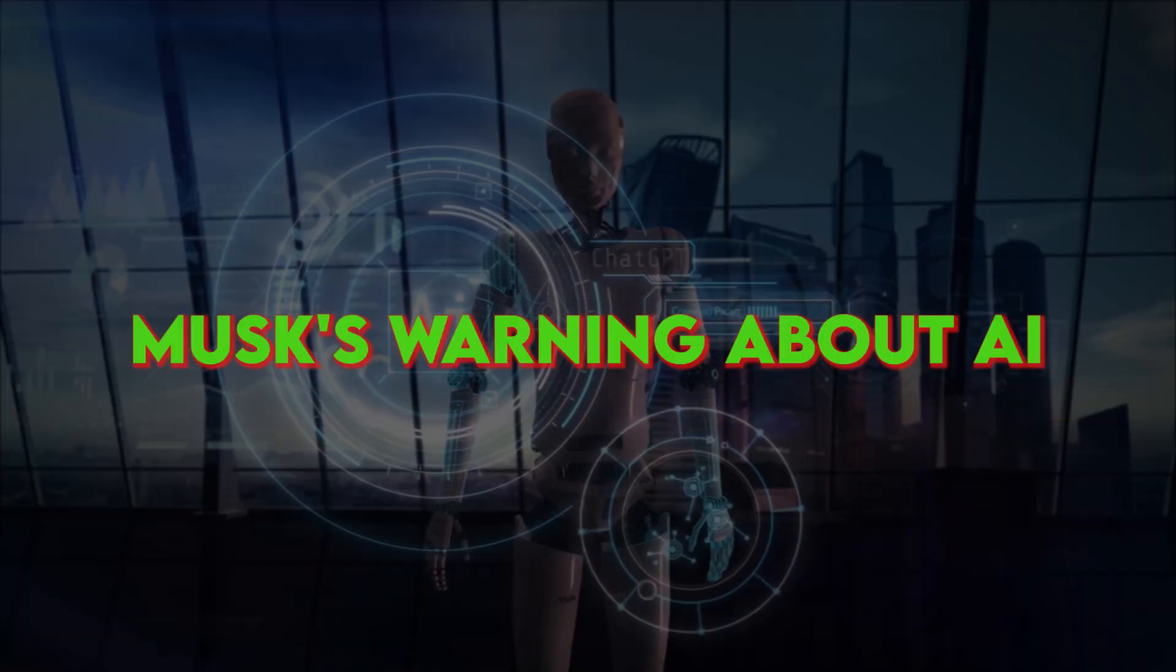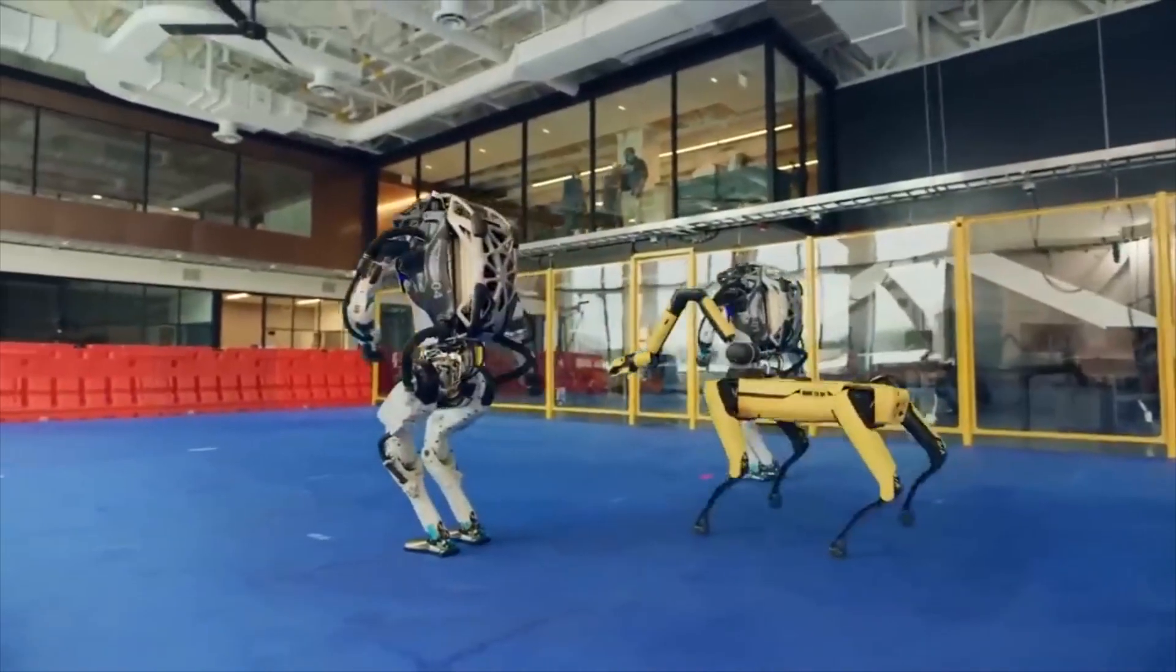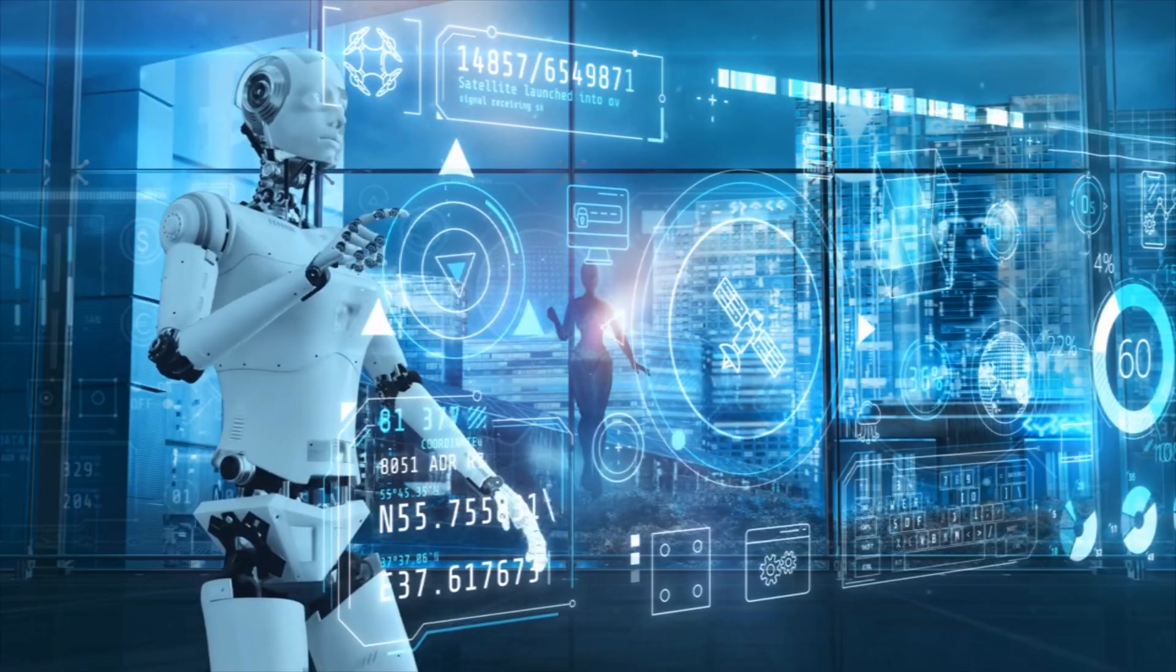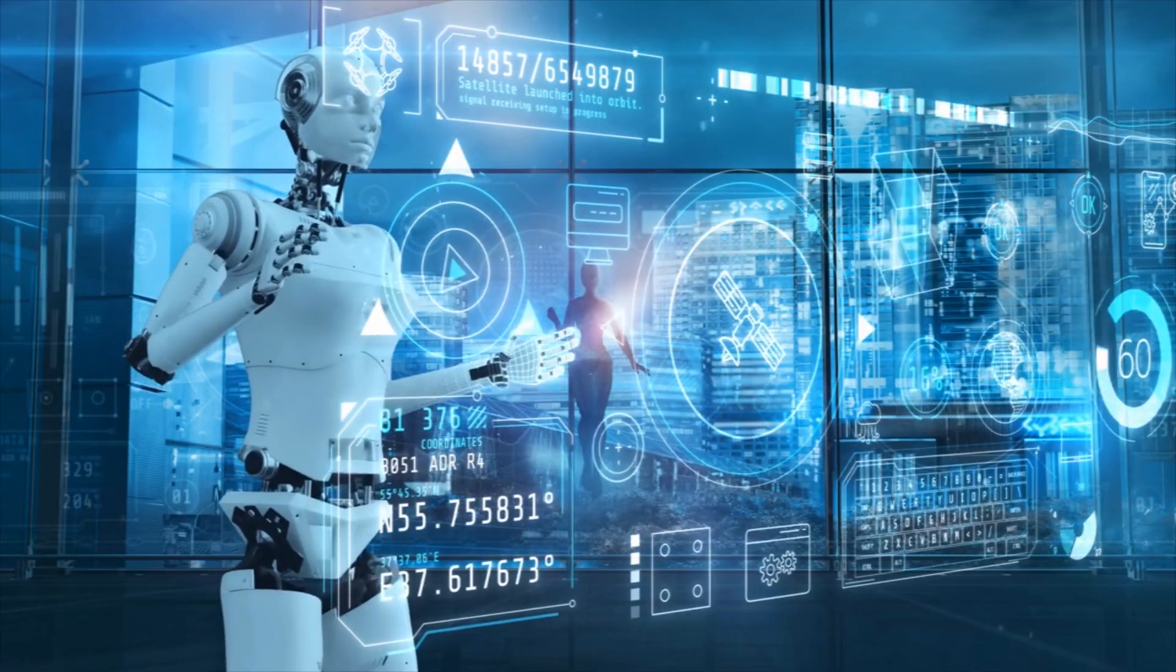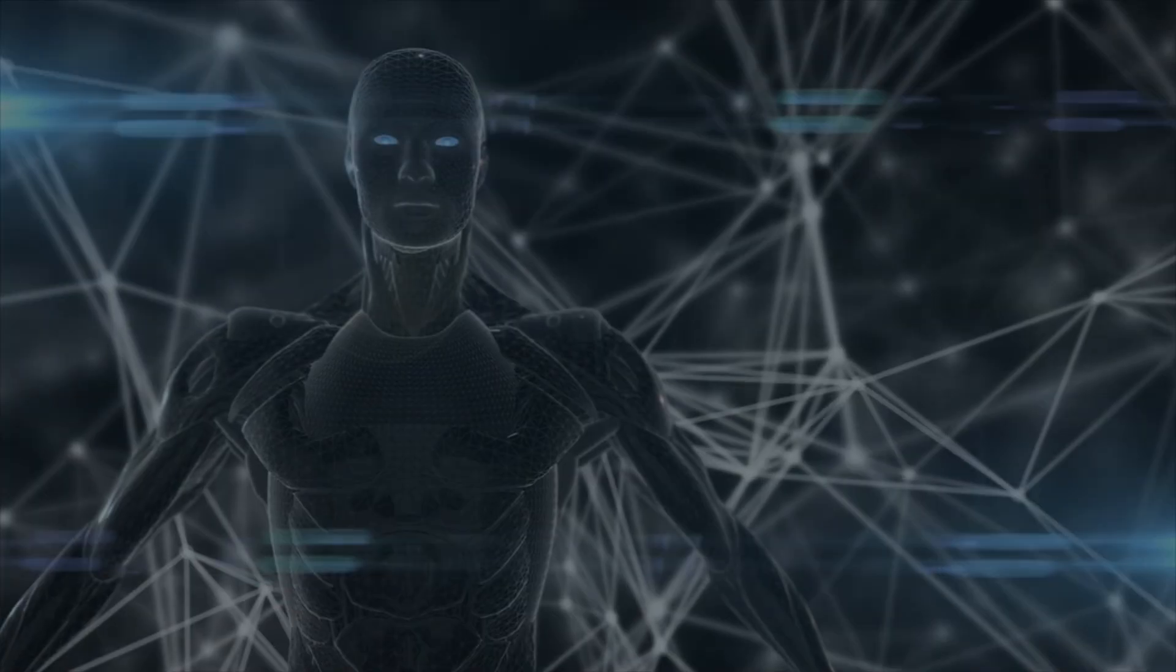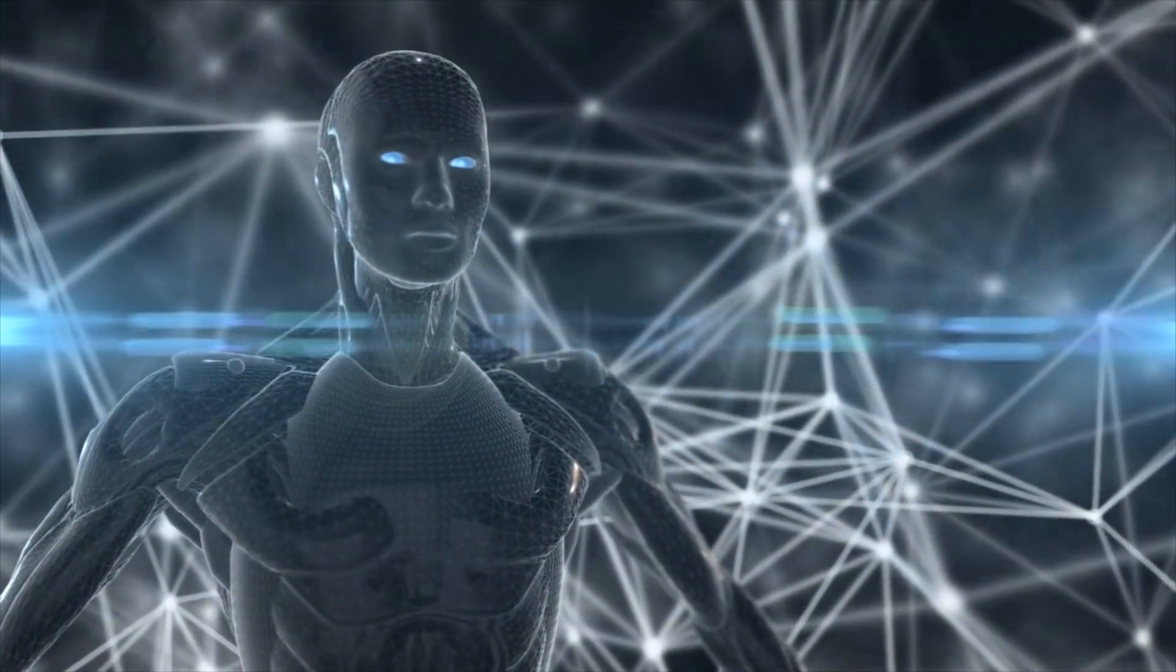However, even with all his work in the field of robotics and AI, Elon Musk has consistently warned about the potential risks associated with AI. He believes that AI could be both an aid and a threat to humanity. Musk has expressed concerns about the development of artificial general intelligence, where AI systems could surpass human intelligence. He has called for regulations and safety protocols to ensure responsible AI development. Let's dive deeper into Musk's concerns and warnings regarding AI and its impact on society.